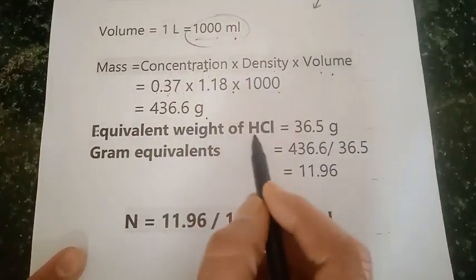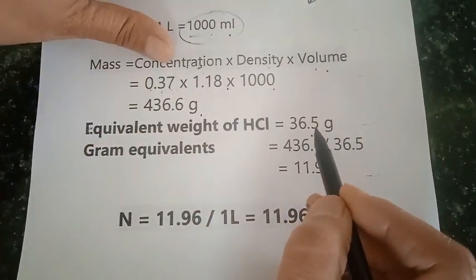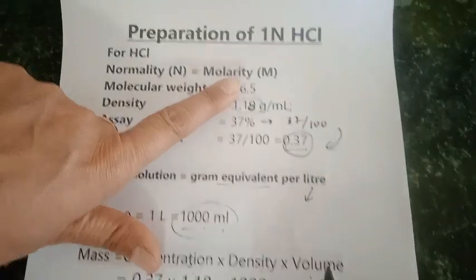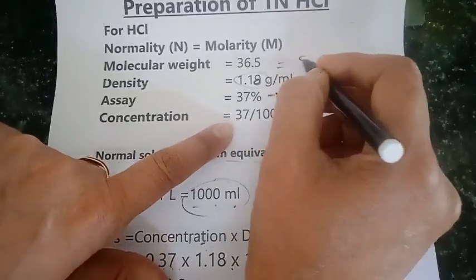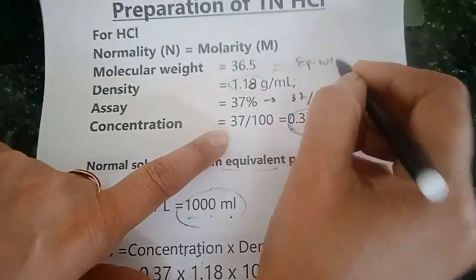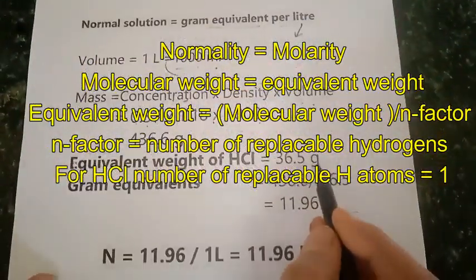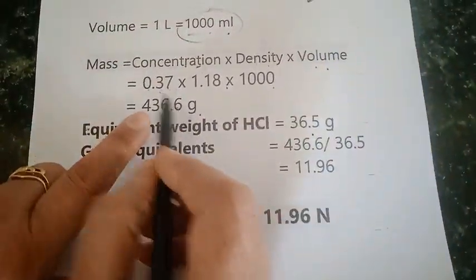Now the equivalent weight of HCl, because we need to calculate the gram equivalent. So equivalent weight for HCl is same as the molecular weight because the equivalent weight is molecular weight divided by N factor. So here in this case N factor is 1.